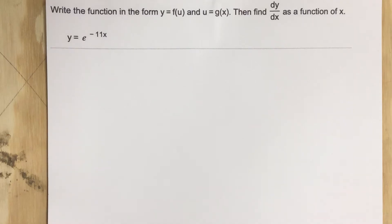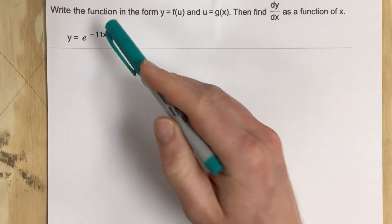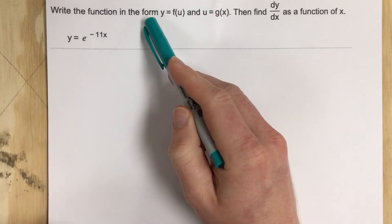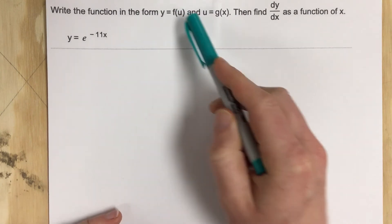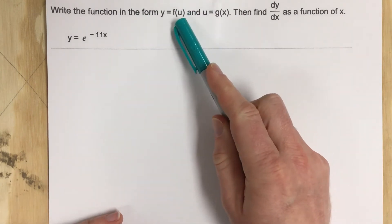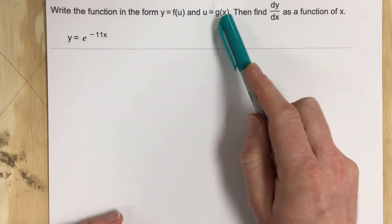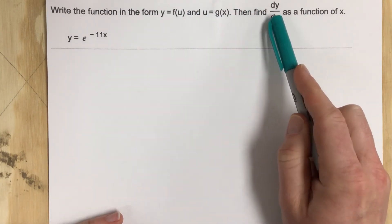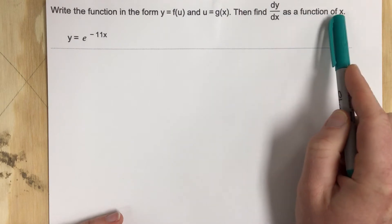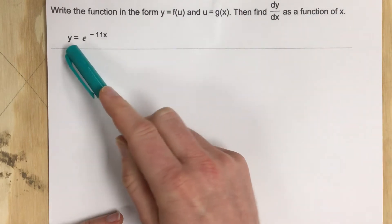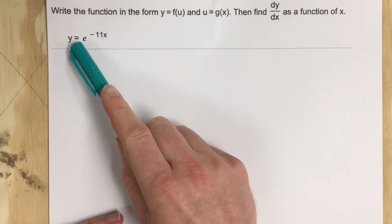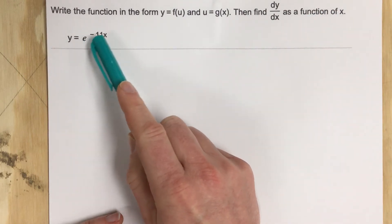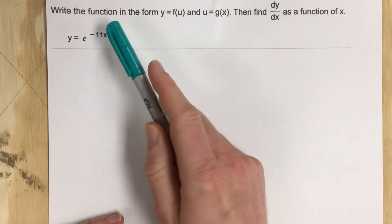This is problem number 2 from section 3.6. In this problem it says write the function in the form y equals f of u and u equals g of x. Then find dy over dx as a function of x. They give us y equals e to the negative 11x.